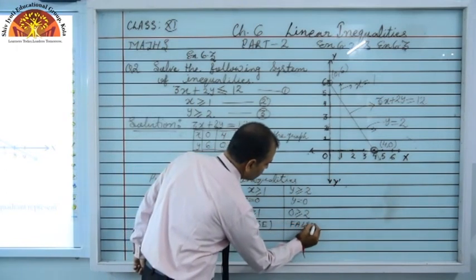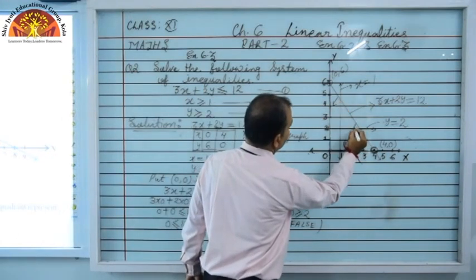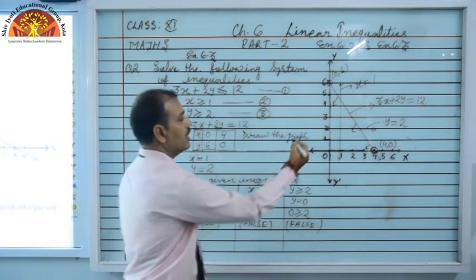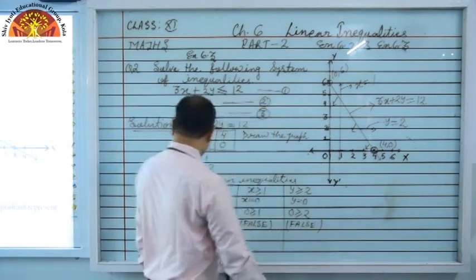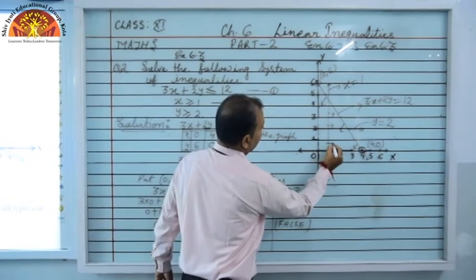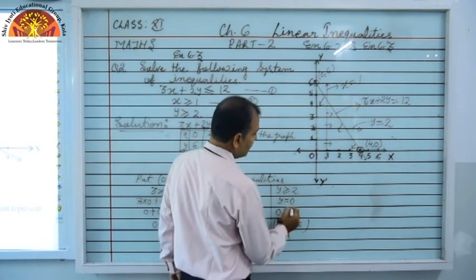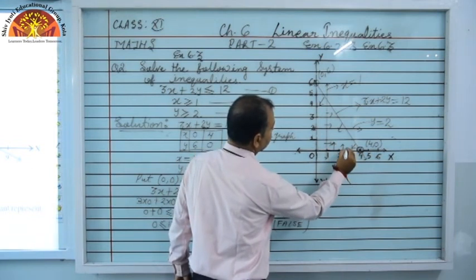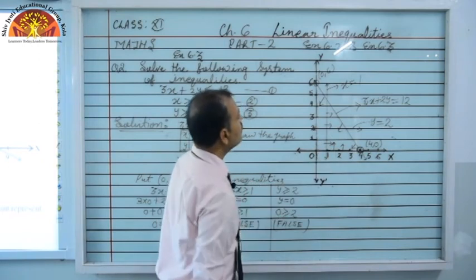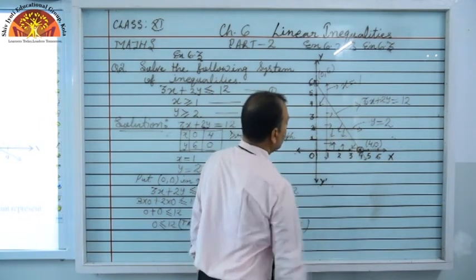Conclusion: all three inequalities have been checked. The first inequality is true — meaning origin side, so shade this way. The second inequality x = 1 is false — meaning shade the second part, away from the origin. The third inequality y ≥ 2 is also false — meaning shade above. The common bounded region satisfying all three inequalities is our shaded solution region.